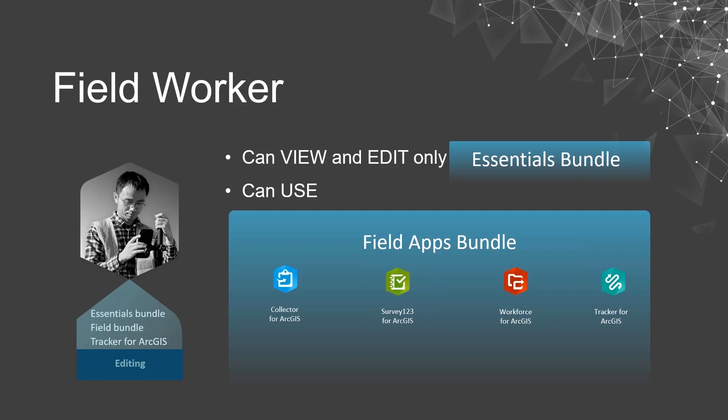Once we get to the field worker level we unlock the field apps bundle, which includes Collector, Survey123, Workforce, and the new application Tracker for ArcGIS. All of these privileges are in addition to the view and edit permissions for the essentials bundle. You can see that each level tends to build off of the previous one.